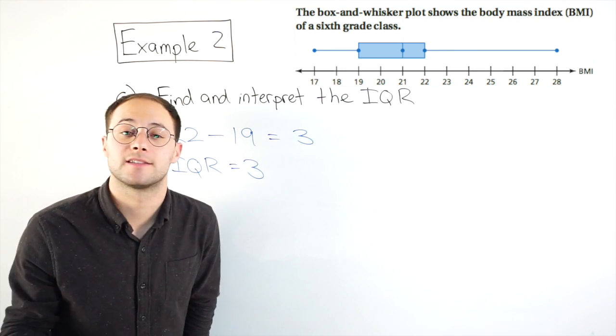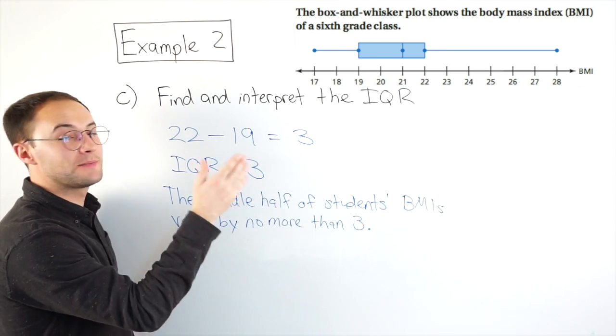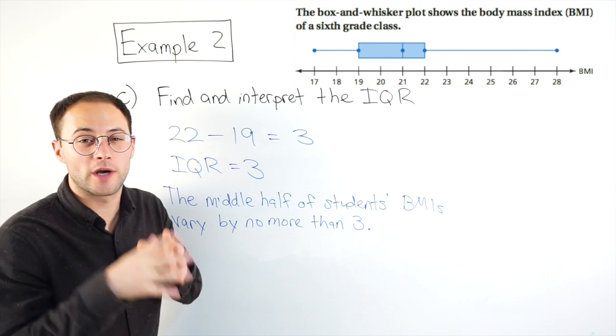Okay, and let's interpret that. So we would say the middle half of students' BMIs vary by no more than three. Here's one to try on your own.